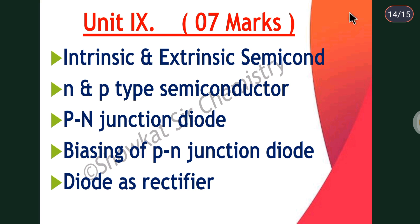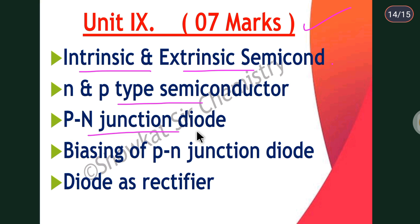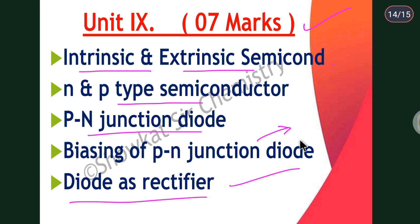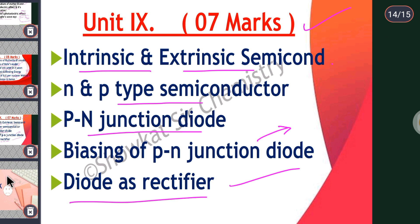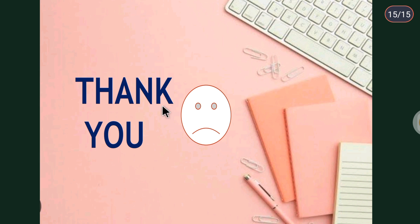Unit 9 is the last unit, carrying 7 marks. Here you will study intrinsic and extrinsic semiconductors, n-type and p-type semiconductors, the p-n junction diode and its biasing — forward and reverse biasing are very important — and the application of a diode as a rectifier. I hope you have understood which topics are important and from which units long answer type questions will be asked. If you have any doubts, comment below.